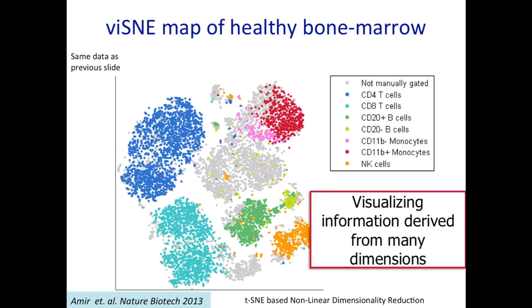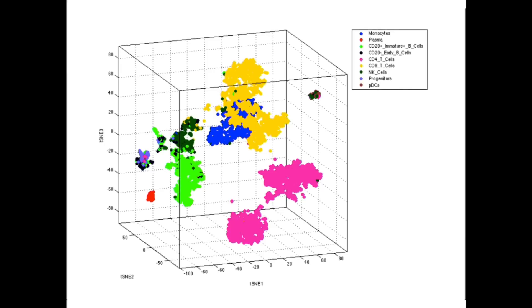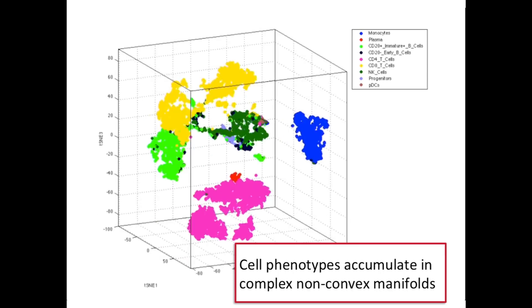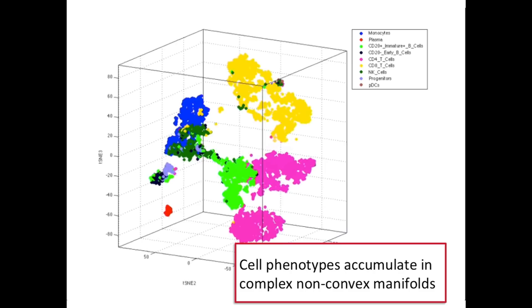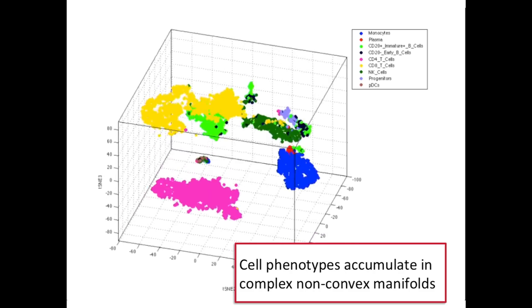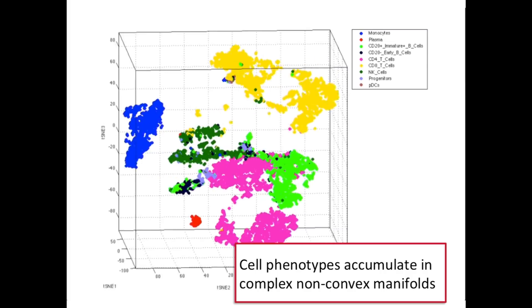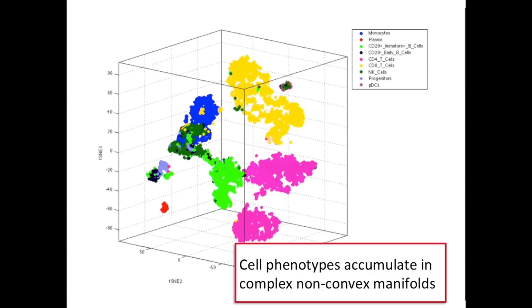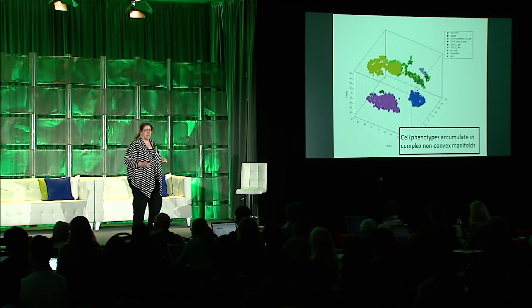Now we see this map — each dot is a single cell, plotted as whether it's similar or non-similar. We can see the same map in three dimensions. This is the exact same data, mapped to the best three dimensions. You can see that our immune subsets are actually not round, convex, ellipsoid balls as they're typically described, but they're actually formed into concave, complex shapes and manifolds that twist and turn. Every coordinate is a different combination of markers, and these shapes actually explain the function, abilities, and boundaries of these cell types.